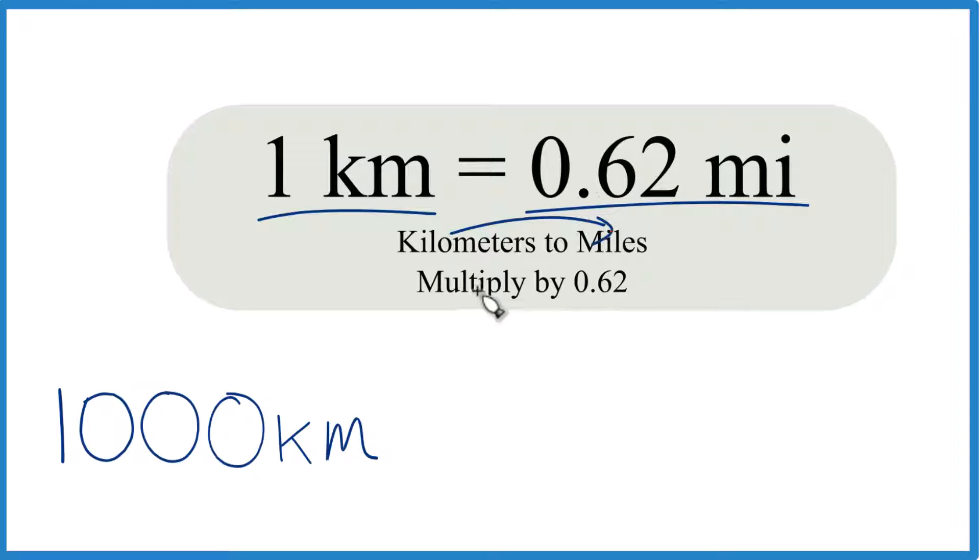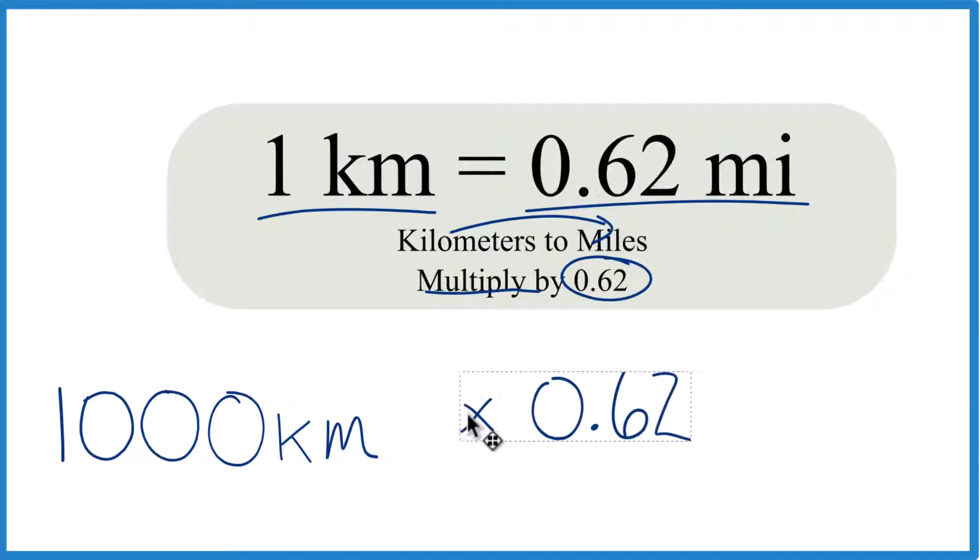We're going from kilometers to miles, so we're going to multiply by this 0.62 number. We have a thousand kilometers, multiply by 0.62.